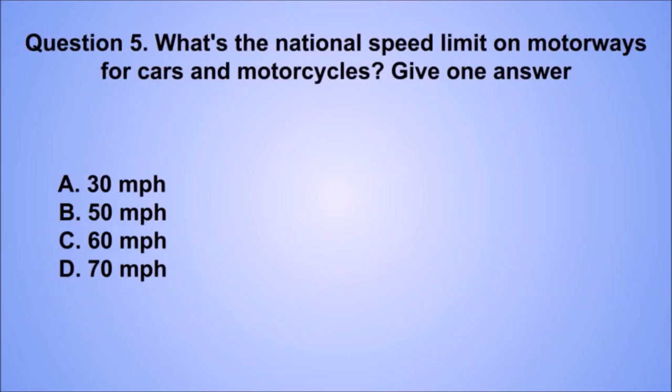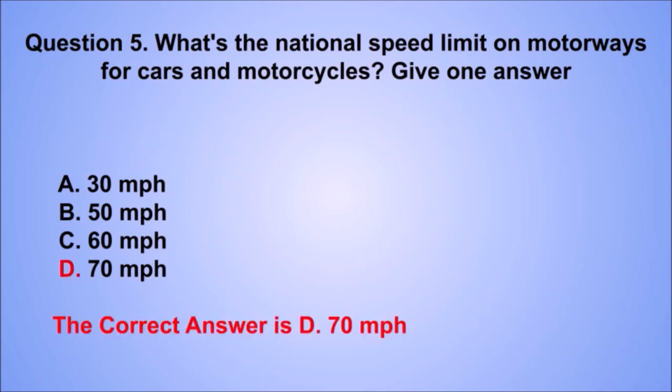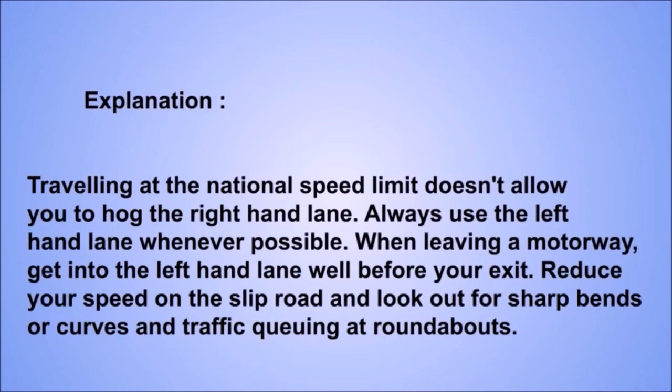Question 5. What's the national speed limit on motorways for cars and motorcycles? The correct answer is D: 70 mph. Traveling at the national speed limit doesn't allow you to hog the right-hand lane — always use the left-hand lane whenever possible. When leaving a motorway, get into the left-hand lane well before your exit and reduce your speed on the slip road.